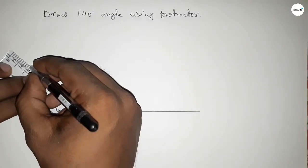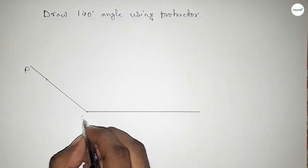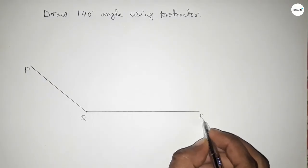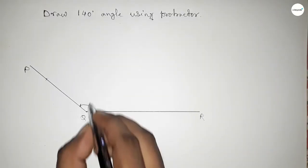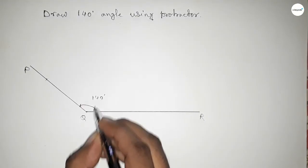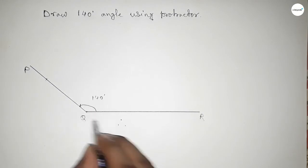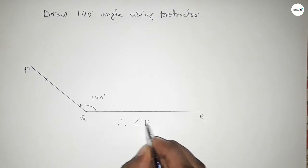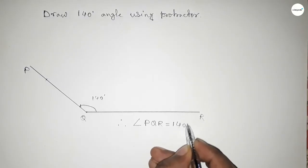So we got 140-degree angle. So this is P, Q, and R. So angle PQR equals 140 degrees. Therefore, angle PQR we can write equals 140 degrees. That's all.